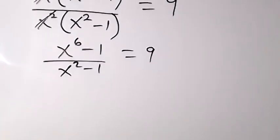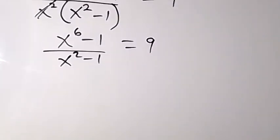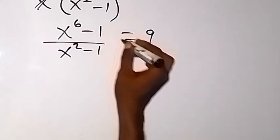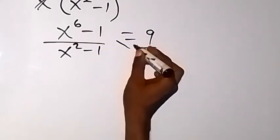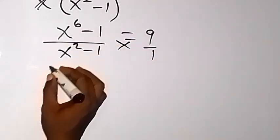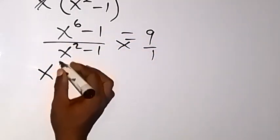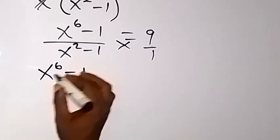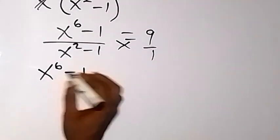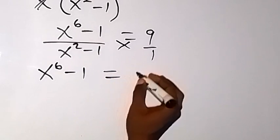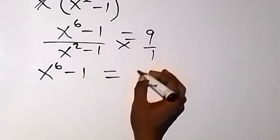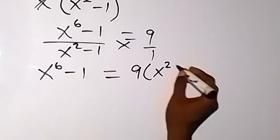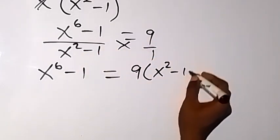Then we can cross multiply from here. That is, when we cross multiply, we have x raised to power 6 minus 1, which equals 9 times x raised to power 2 minus 1.